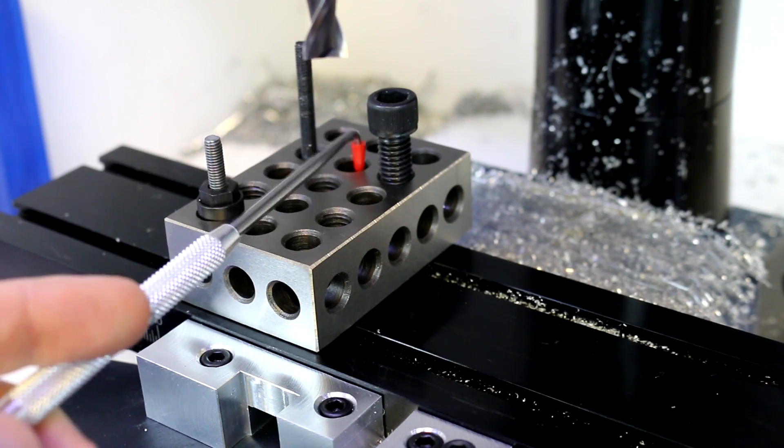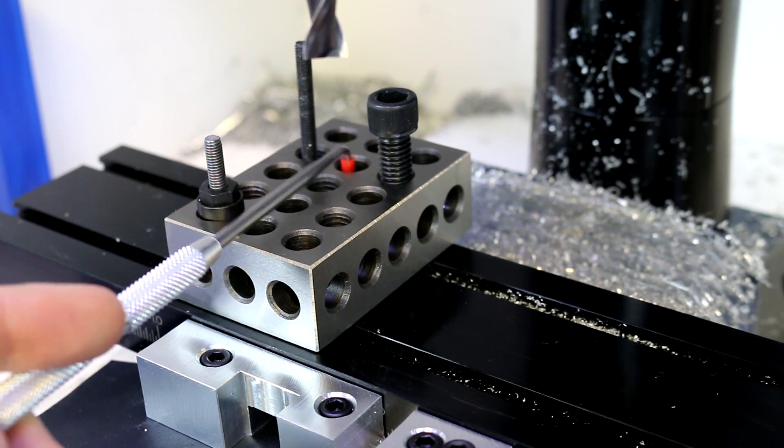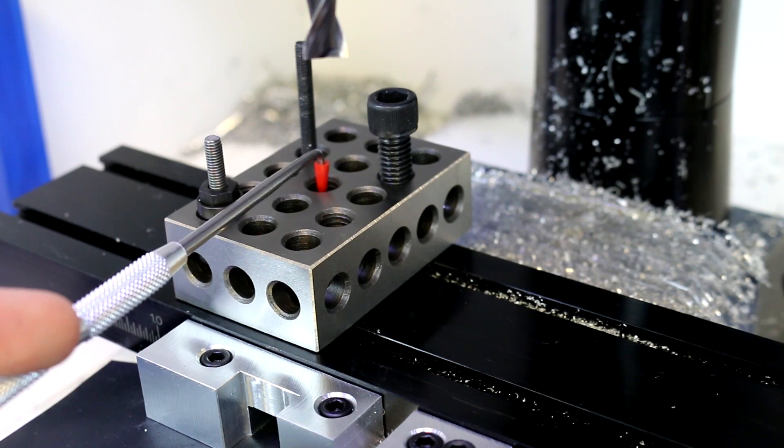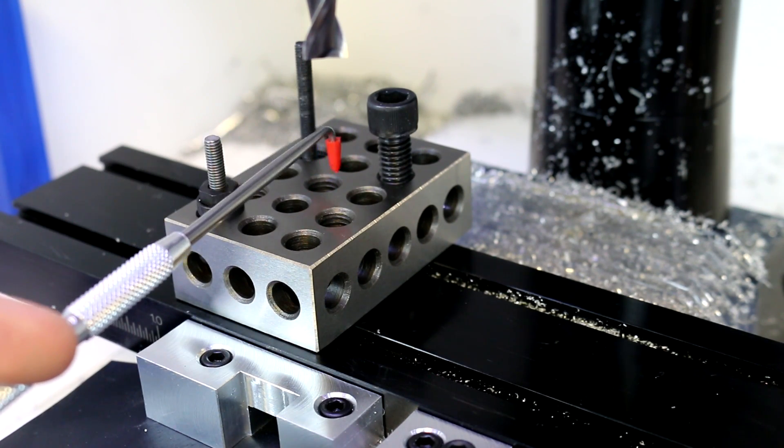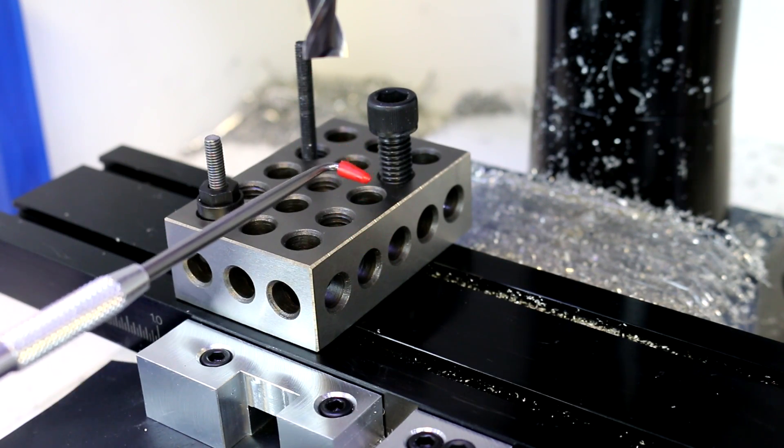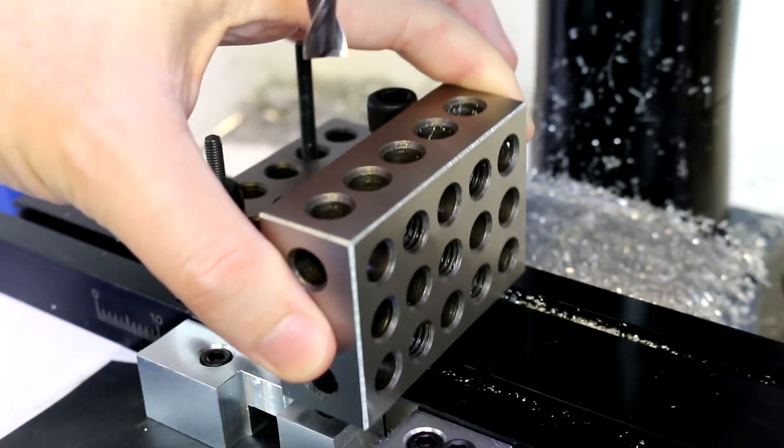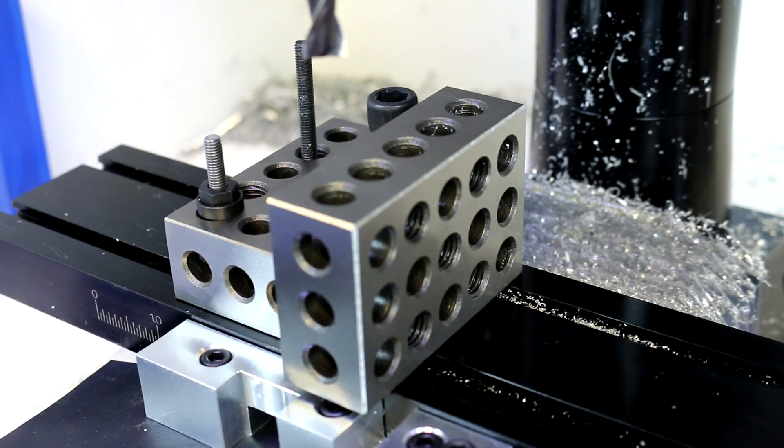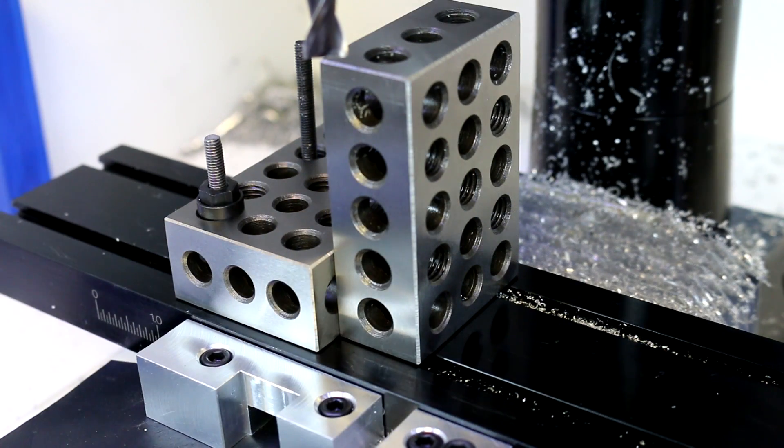All of these holes are designed to where you can tap them if you want to, or you can just have a smooth through hole. There are only 5 that are tapped on this particular block. These can be used to raise a workpiece up off the table, either in a 1-inch height, or if you place them in this orientation, a 2-inch height, or in this orientation, a 3-inch height.